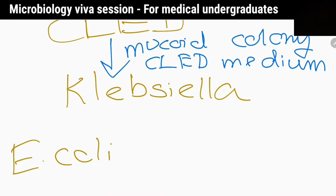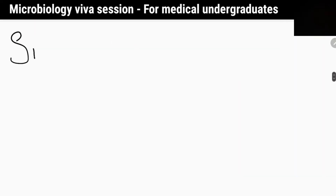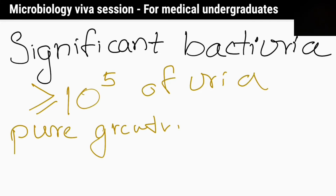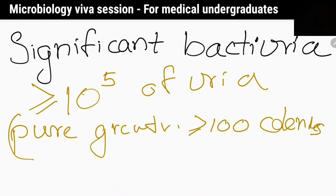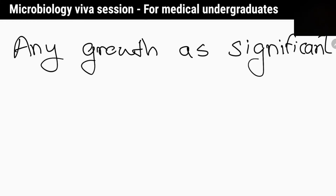What about E. coli? What is the colony appearance? They show non-mucoid yellow colored colonies. What is the criteria to identify significant bacteriuria? 10 to the power 5 or more organisms per one milliliter of urine.